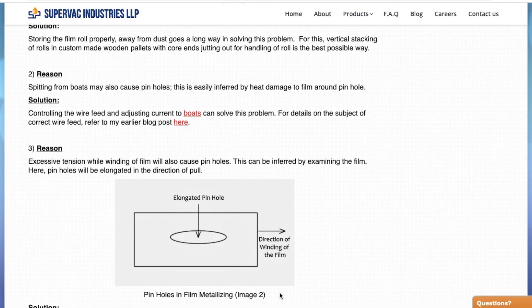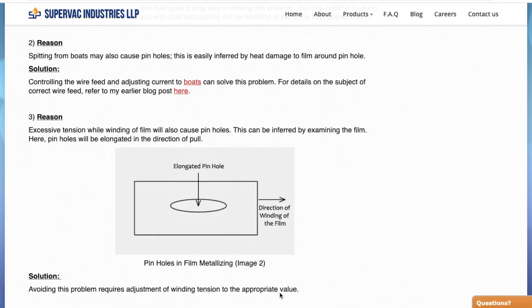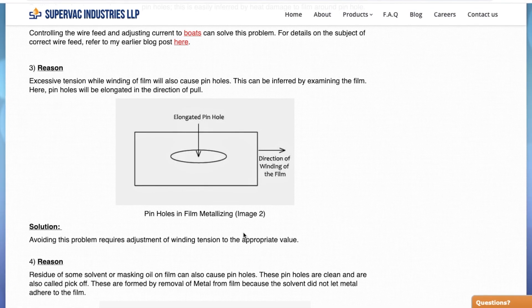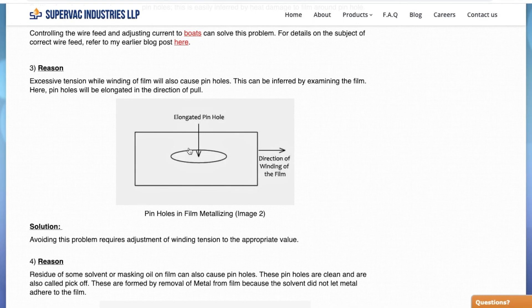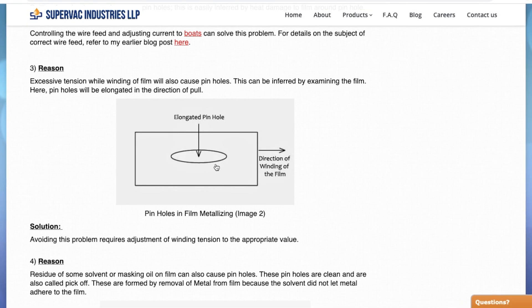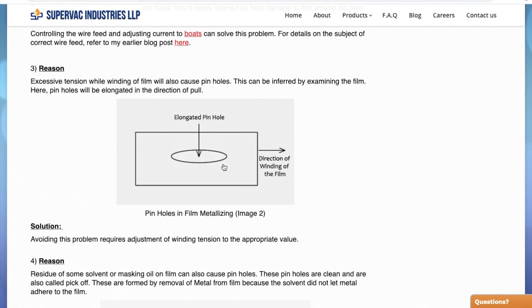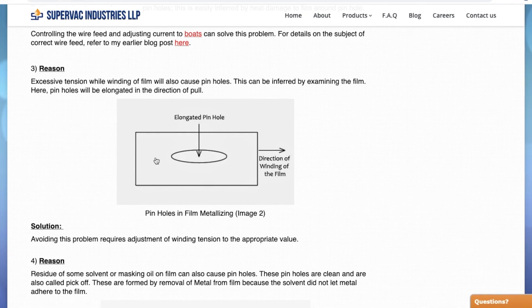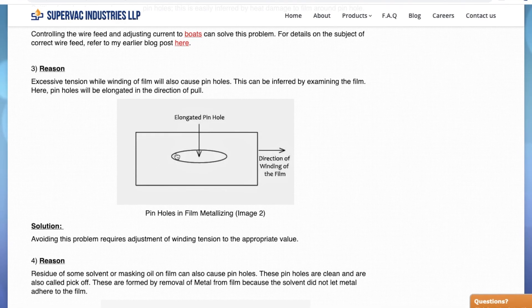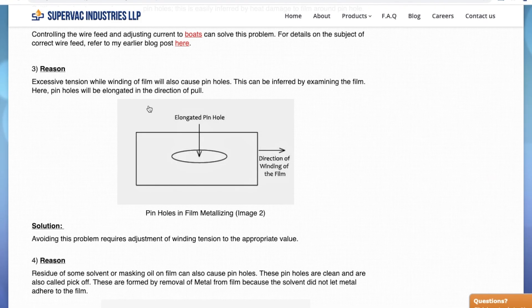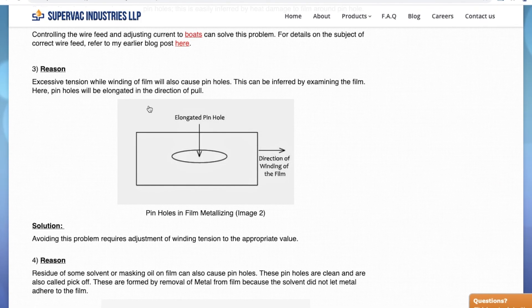Another reason that causes pinholes is a mechanical reason, that is too much of the winding tension. This kind of pinholes are very easily identified because they are elongated in the direction of the winding of the film. This is a mechanical problem. The film has been stretched too much which has caused this pinhole to come. So solving this is easy again. You just have to adjust the winding tension. You are winding it at too high a tension.